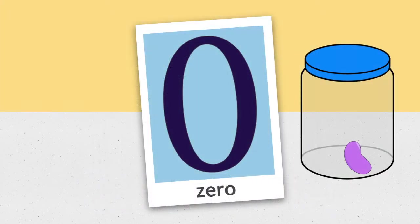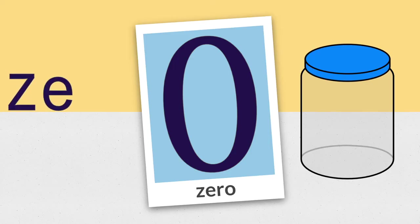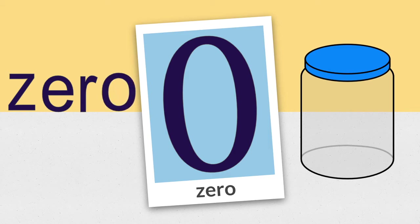Here is the number zero. I need to eat that jelly bean so that there will be zero jelly beans in the jar. Zero. Could you spell it with me? Zed or Z, E, R, O. Zed-E-R-O spells zero.